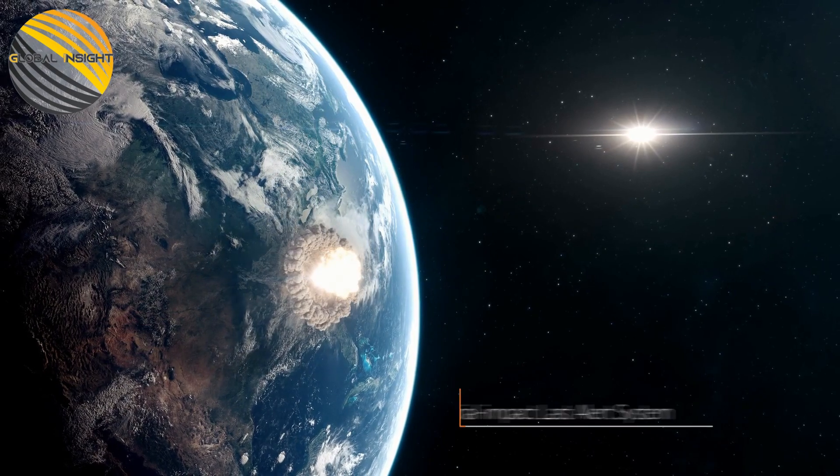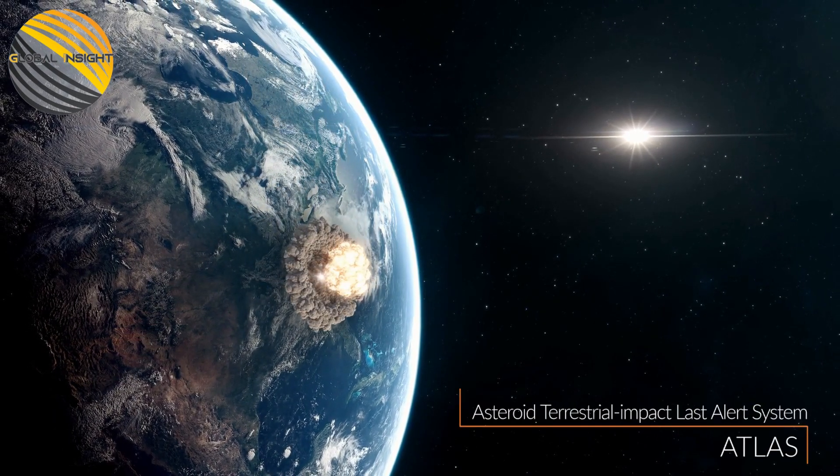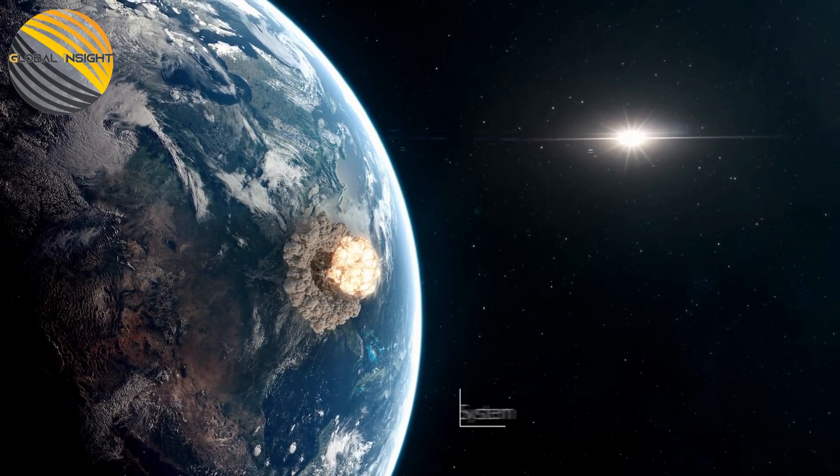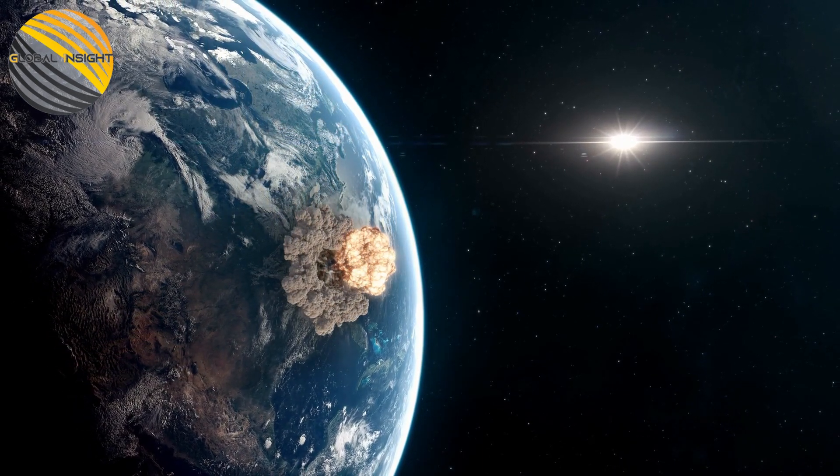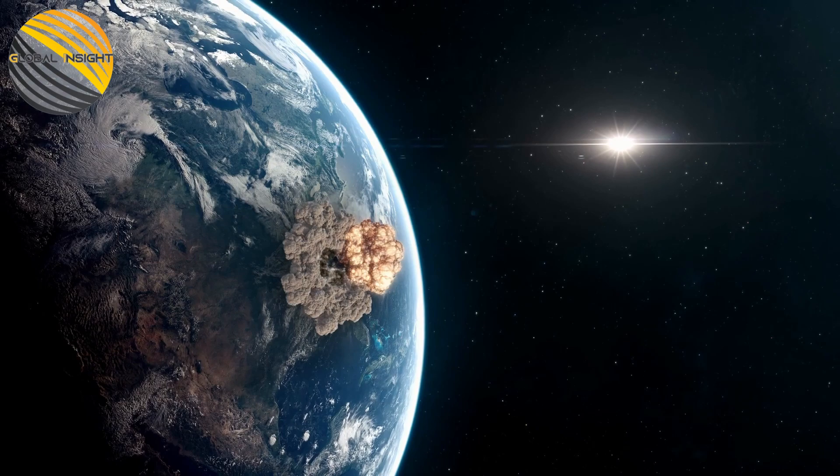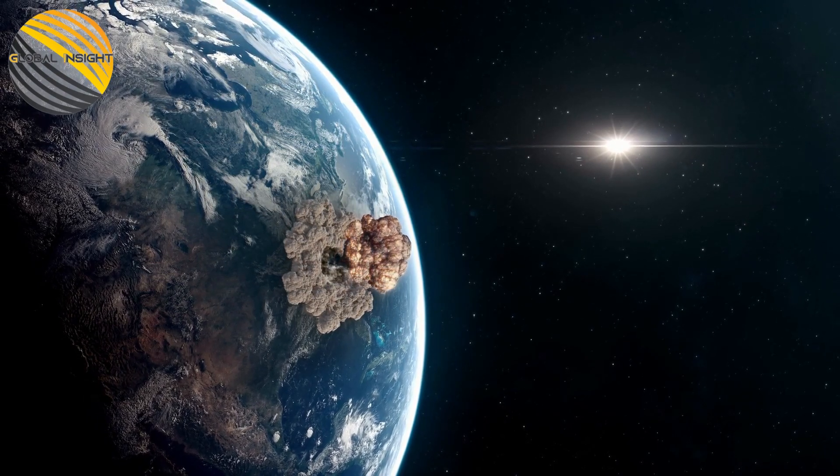The Asteroid Terrestrial Impact Last Alert System, ATLAS, a collection of four telescopes that can scan the entire night sky every 24 hours, is used by NASA to monitor the positions and orbits of approximately 28,000 asteroids.